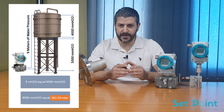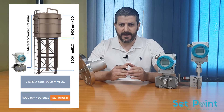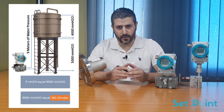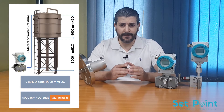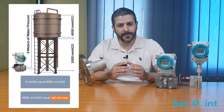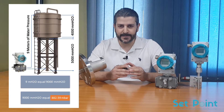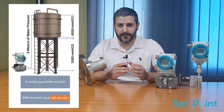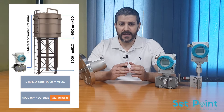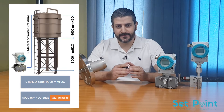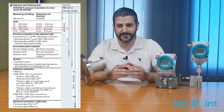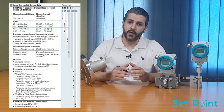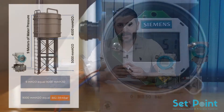Converting this value to millimeter H2O, the result will be 9,000 mmH2O. Now we convert this value to millibar in order to select the appropriate span for the transmitter. The result will be around 828.5 millibar, so we go with the 1600 millibar option.